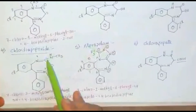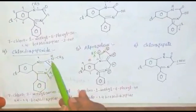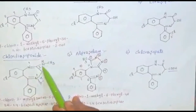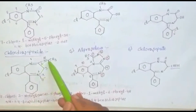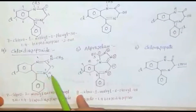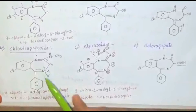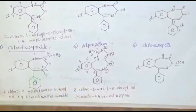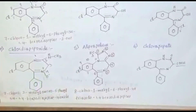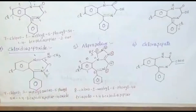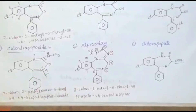Next, chlordiazepoxide: a methylamino group is substituted at the second position, and an oxide group is present at the fourth nitrogen. That is called chlordiazepoxide.